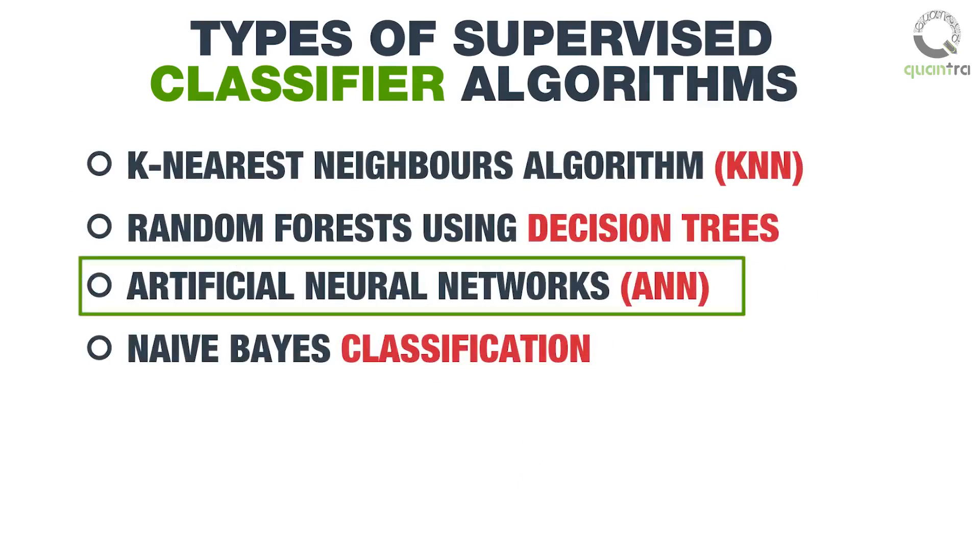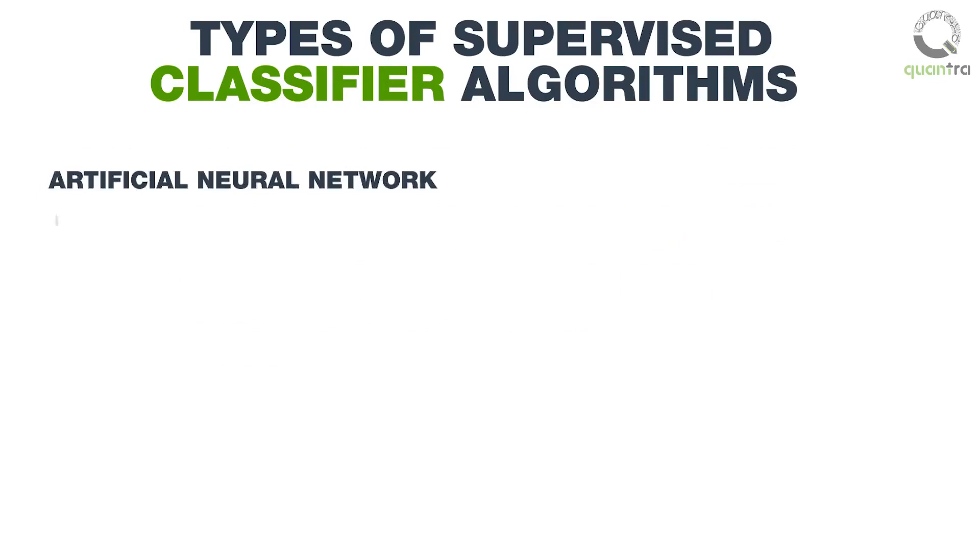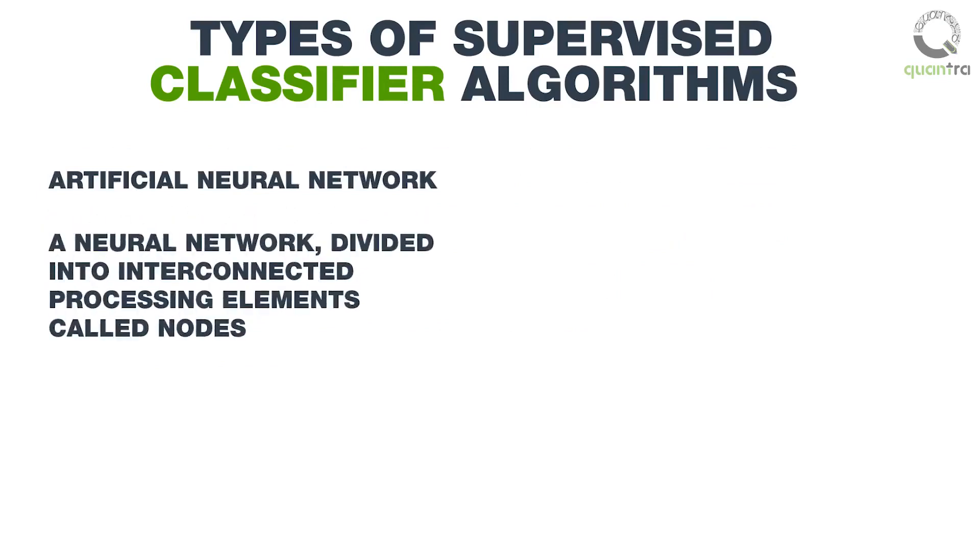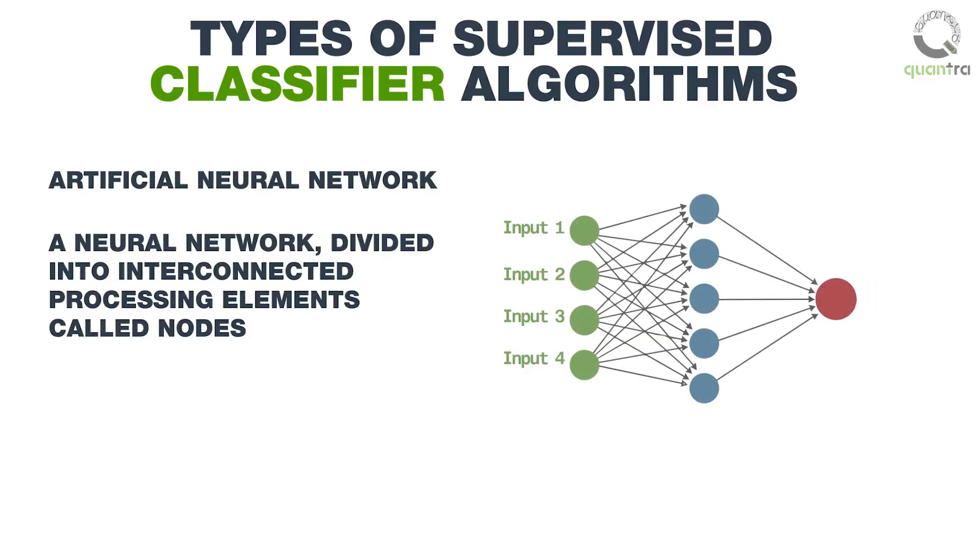Next we will discuss about artificial neural network. An ANN can be thought of as a neural network which is divided into interconnected processing elements called nodes. The outermost layer of the nodes is called the input layer, which receives the data elements.